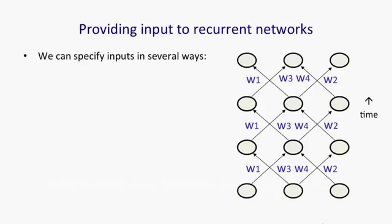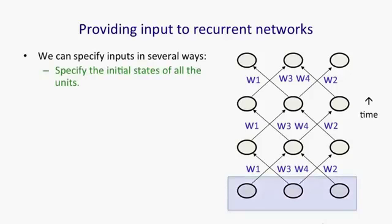There's many ways in which we can provide the input to a recurrent neural net. We could, for example, specify the initial state of all the units. That's the most natural thing to do when we think of a recurrent net like a feedforward net with constrained weights.